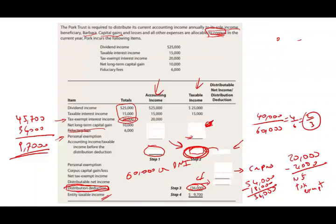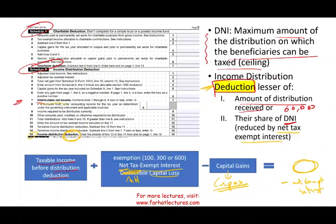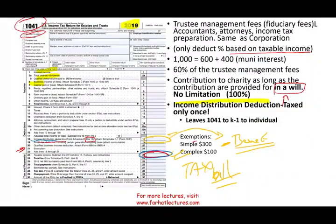Going back to Form 1041, the income distribution deduction of $36,000 goes on line 18. DNI of $54,000 appears on Schedule B, line 7. Adjusted total income was $45,700. This is the magic number — the $36,000 distribution deduction that we plug into page one to arrive at our final tax bill.